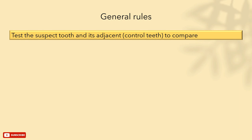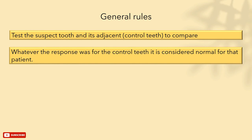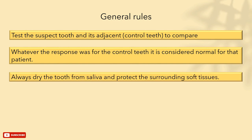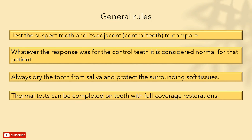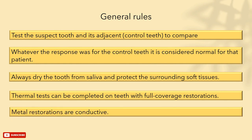Before we start, here are general rules to keep in mind. Always test the suspected tooth and its adjacent teeth, which we call control teeth, for comparison between normal sensation and sensation in the affected tooth. Whatever the response is for the control normal teeth is considered normal for that patient. Always dry or isolate the tooth from saliva and protect the surrounding soft tissues to avoid false negative or positive responses. Thermal tests can be completed on teeth with full coverage restorations, as metal restorations are conductive.